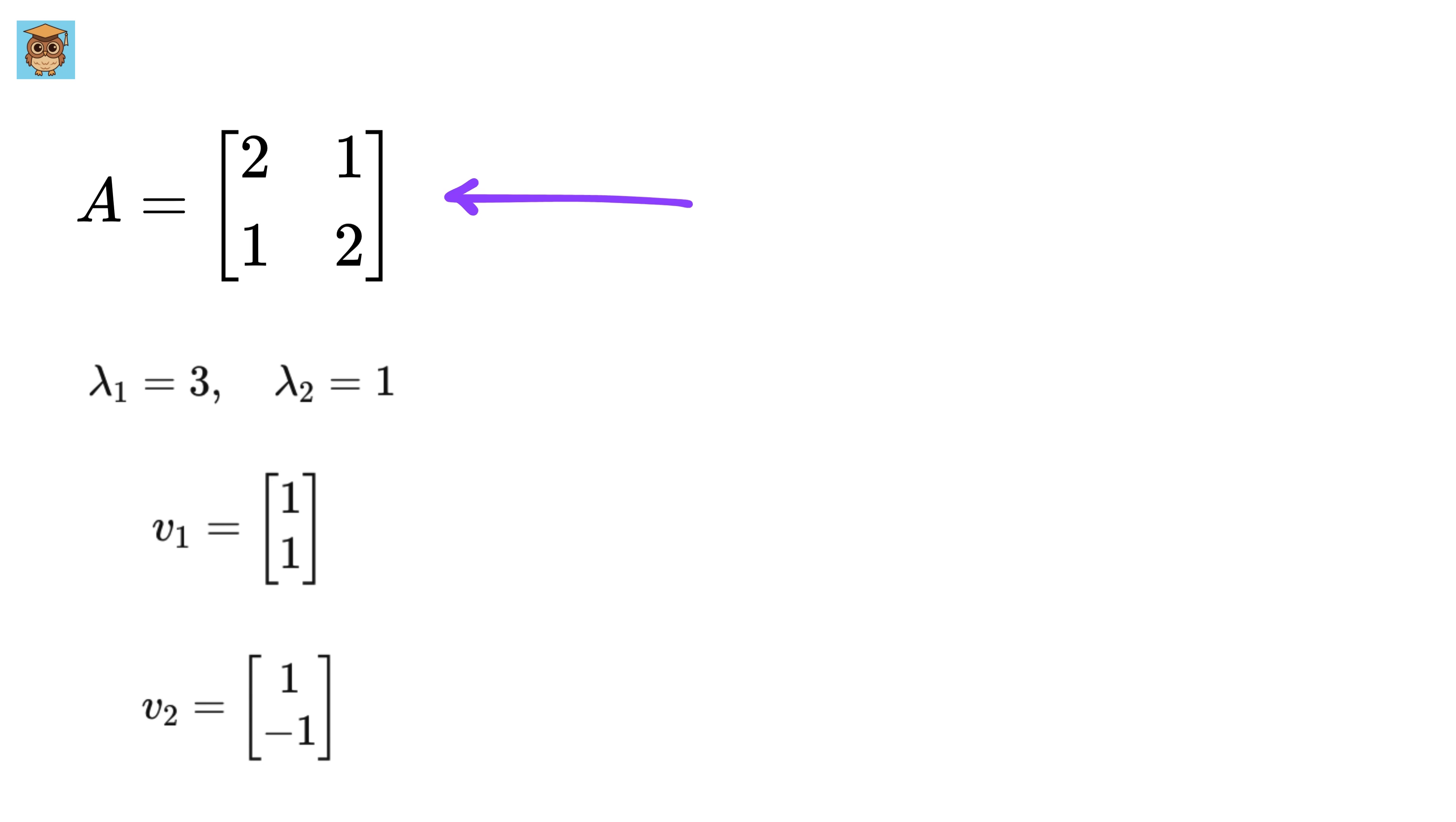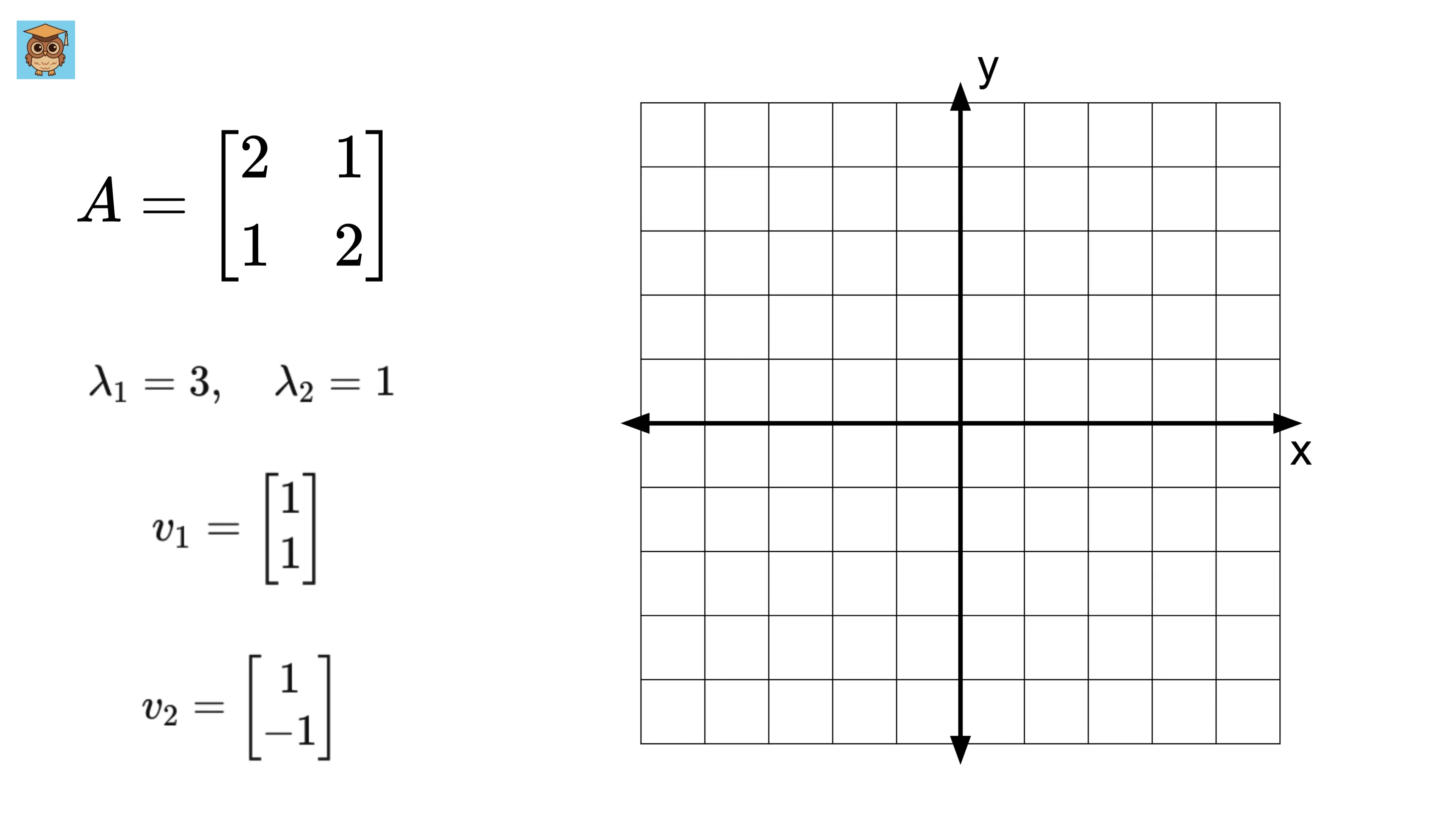Assume we have a random 2x2 matrix like this. Now assume we have a point, say (0,1), which we can represent using this vector. Now if we multiply this matrix with this vector, we get another vector which is this point on the graph, and it is represented by this vector. So what we saw is this 2x2 matrix acts as something which transforms a vector into some other vector.